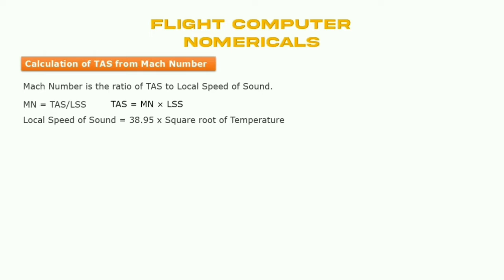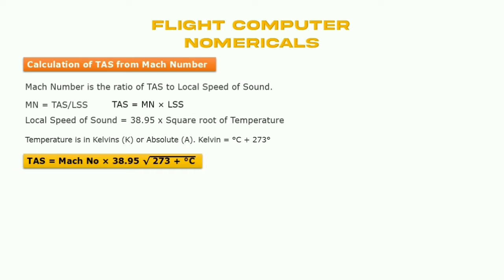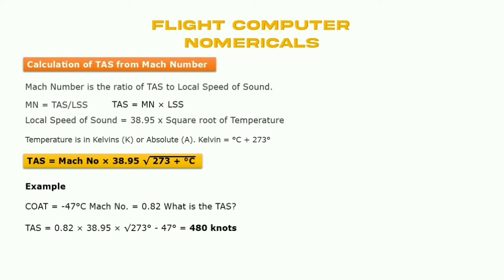Calculation of true airspeed from Mach number: Mach number is the ratio of true airspeed to the local speed of sound. Mach = TAS / LSS. Rearranging: TAS = Mach × LSS. Local speed of sound equals 38.95 times the square root of temperature in Kelvin. Temperature in Kelvin equals degrees Celsius plus 273. So the formula becomes: TAS = Mach × 38.95 × √(273 + °C). If you put in the values from the example on screen, TAS will be 480 knots.